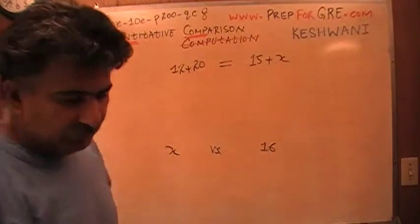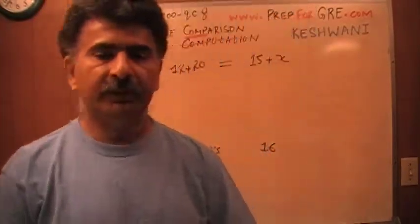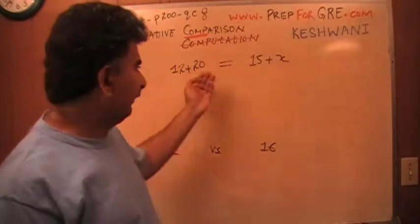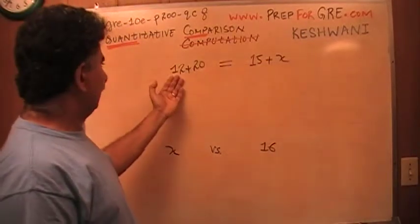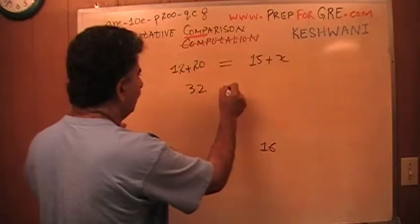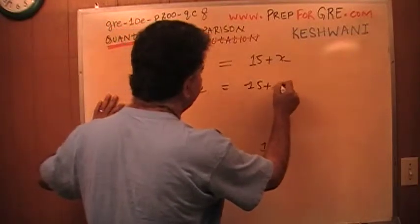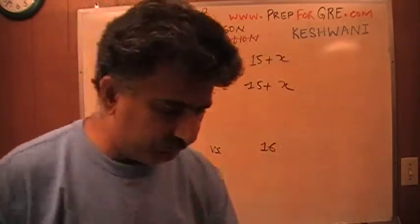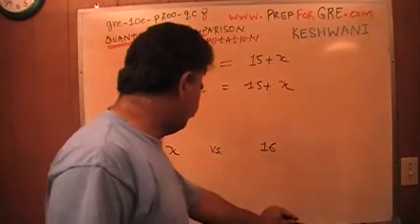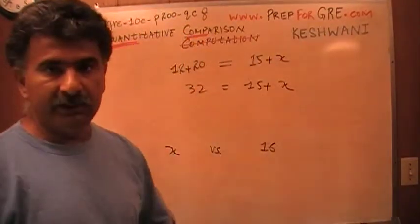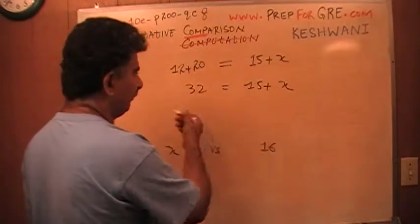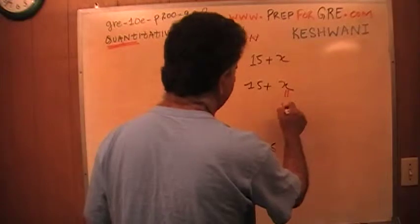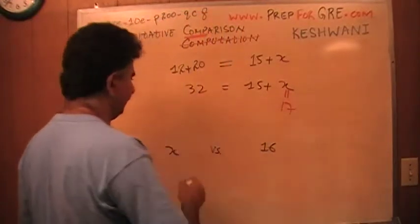So if you tell me that the average of two numbers is the same as the average of the other two numbers, that tells me that the sum of these two numbers has to be the same as the sum of these two numbers. This is 32 and this is 15 plus X. So 15 plus what number is going to be 32? Or if you want to be a little bit more geeky, if you want to be a little bit more proper and nerdy, you can subtract 15 from both sides and you will see that it's 17 obviously. X needs to be 17 because 17 plus 15 is 32.